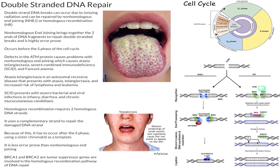Homologous recombination is the other way to repair double-stranded DNA breaks. It's less error prone than non-homologous end-joining and has to occur after the S phase using the sister chromatid as a template. Problems with homologous recombination due to issues with BRCA tumor suppressor genes can lead to breast and ovarian cancer.